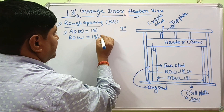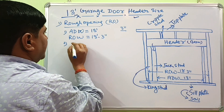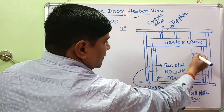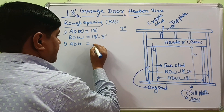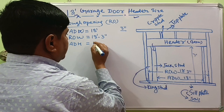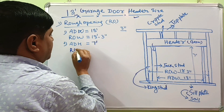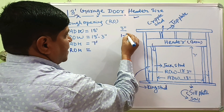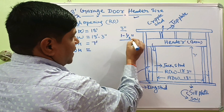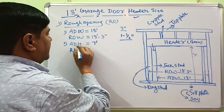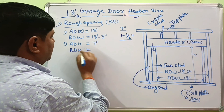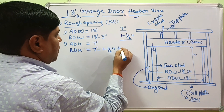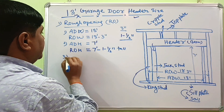The actual door height is about 7 feet. The rough opening height will generally be one and a half inches taller than the actual door height. So if the actual door height is 7 feet, the rough opening height will be 7 feet 1½ inches tall.